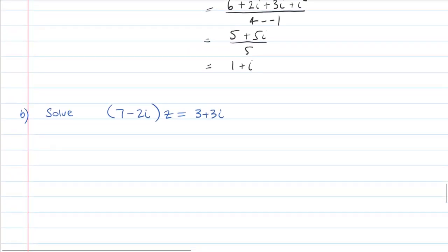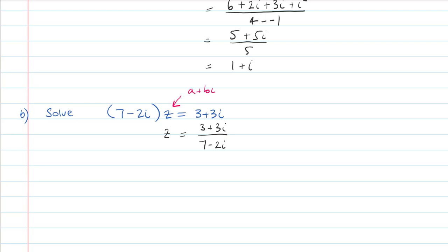Then we have a question that involves solving, which is reasonably common. This is just one step off the question above: z equals 3 plus 3i over 7 minus 2i. As a note, if I change z to equal a plus bi, I could expand that and equate the real and imaginary parts to solve for a and b — another worthwhile approach. Anyway, the conjugate of 7 minus 2i is 7 plus 2i over 7 plus 2i.